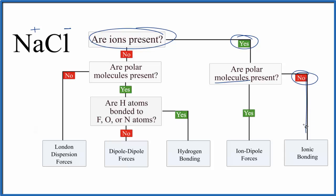So therefore, we go down here — we have ionic bonding for NaCl. That ionic bonding is because we have ions and a big difference in electronegativity. If you look at these different types of intermolecular forces at the bottom, ionic bonding is one of the strongest. That's why NaCl is a solid, a crystal, and has a really high melting and boiling point.